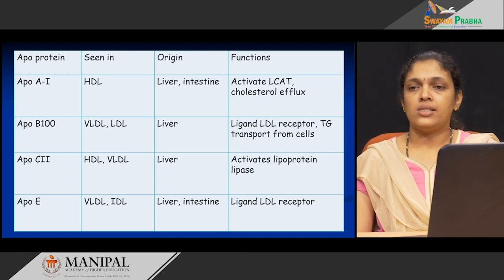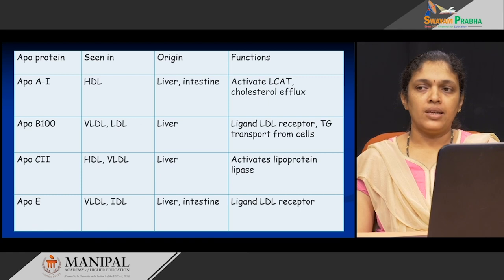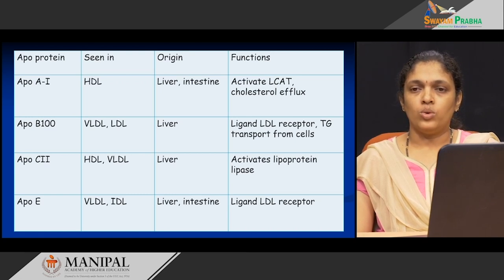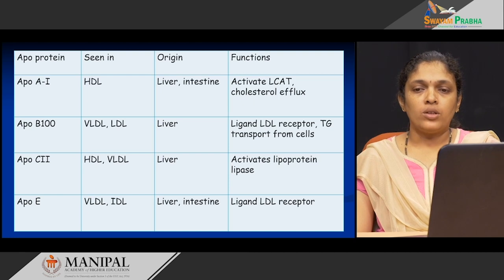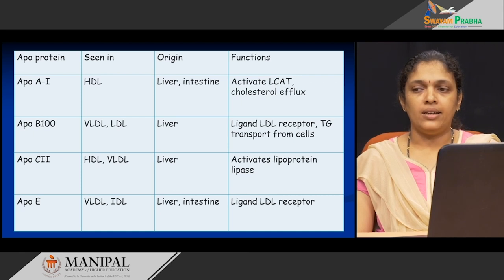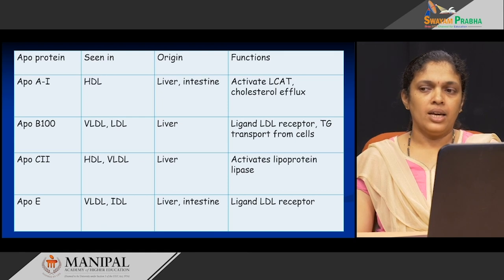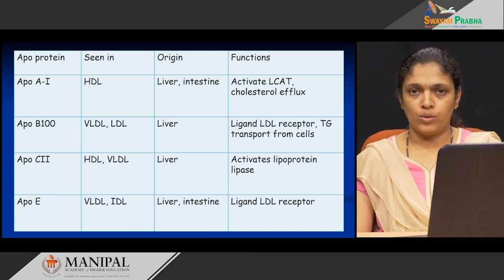Moving on to apo B100 — this is the most important apoprotein, which is part of both LDL and VLDL. Synthesized in the liver, its function is to act as a ligand for the LDL receptor and to favor the transfer of cholesterol to various cells. Apo C2 is required as an activator of the enzyme lipoprotein lipase, synthesized in the liver, and is part of both HDL and VLDL. Apo E is part of VLDL and intermediate density lipoprotein, synthesized in the liver and intestine, and also acts as a ligand for the LDL receptor, enabling recognition of LDL molecules.